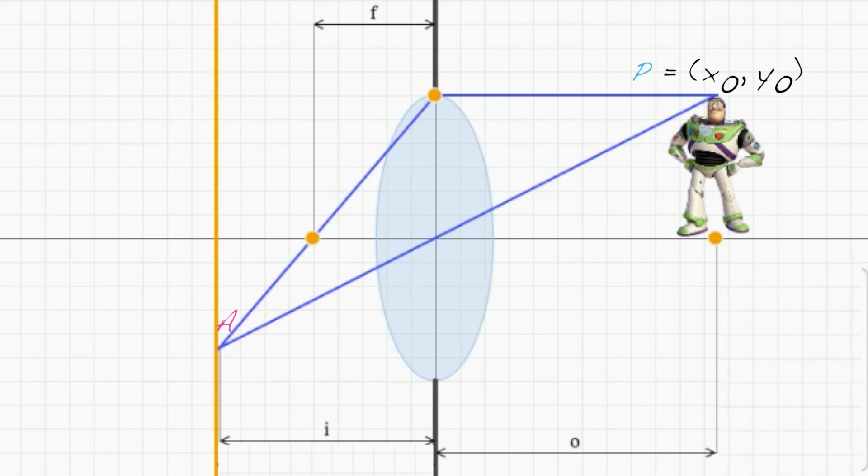And remember, every lens has an aperture which restricts which rays make it into the camera. Let's put a point E at the center of our lens, and a point D at the top of the aperture. In other words, DE is the radius of our aperture.